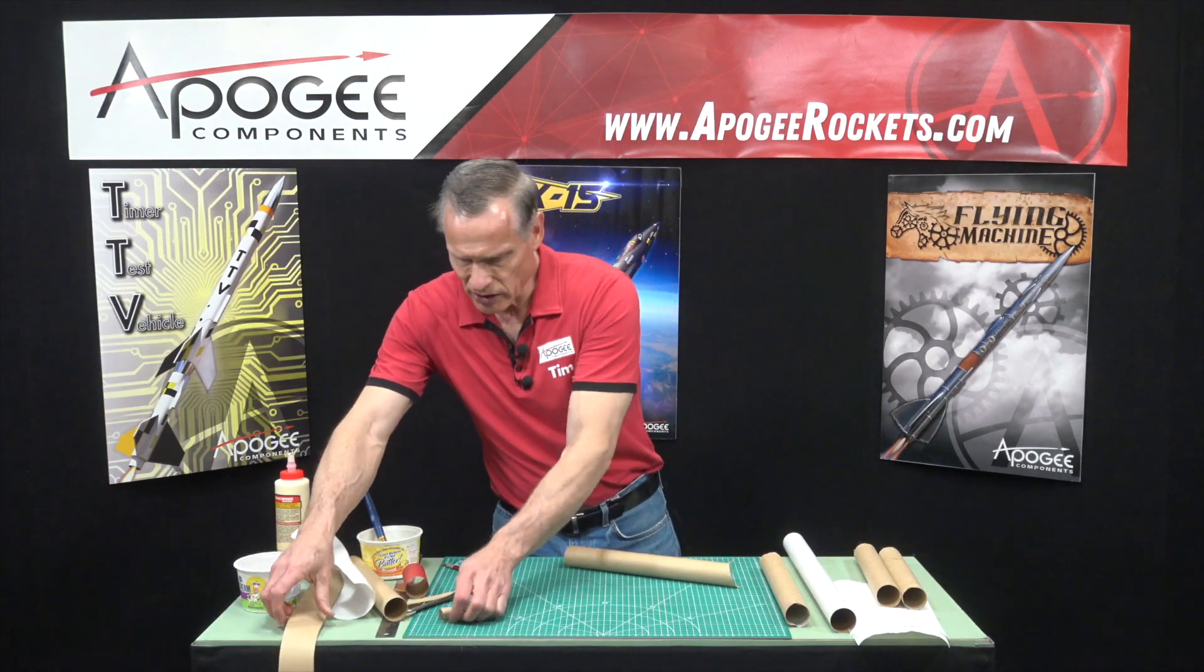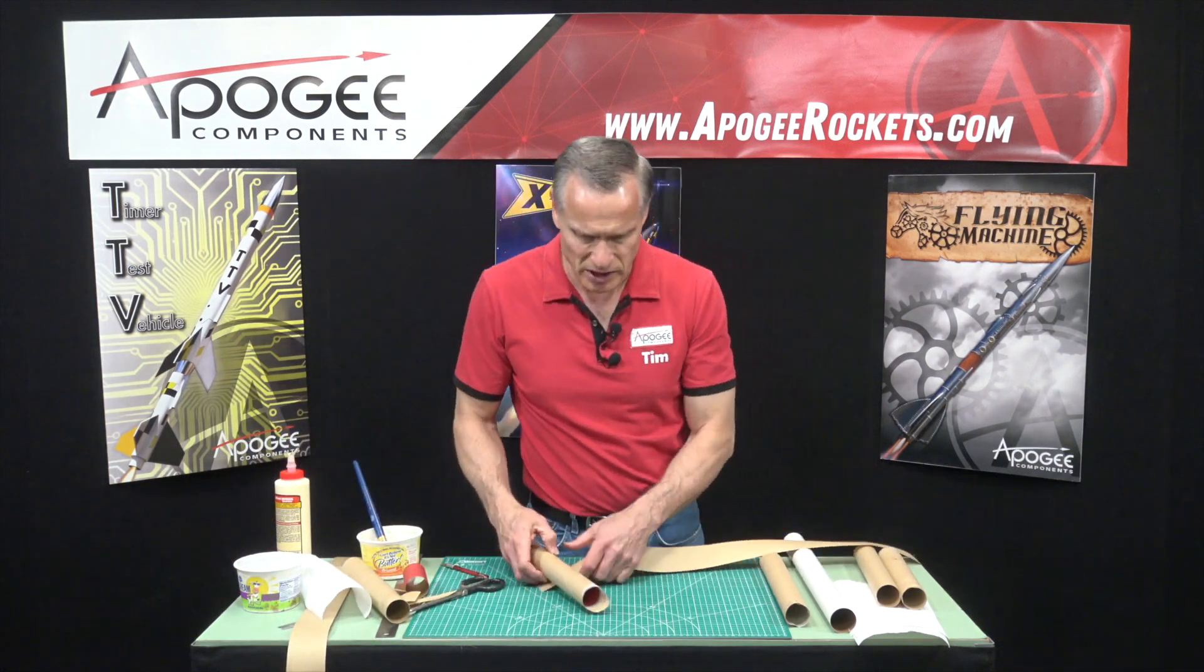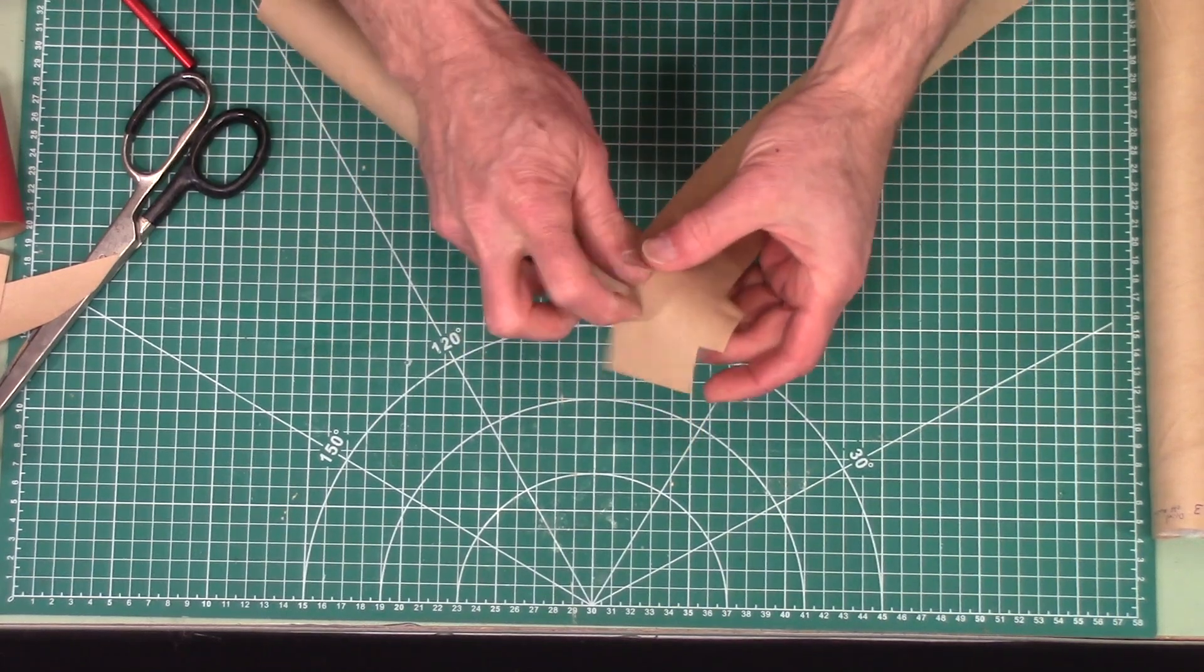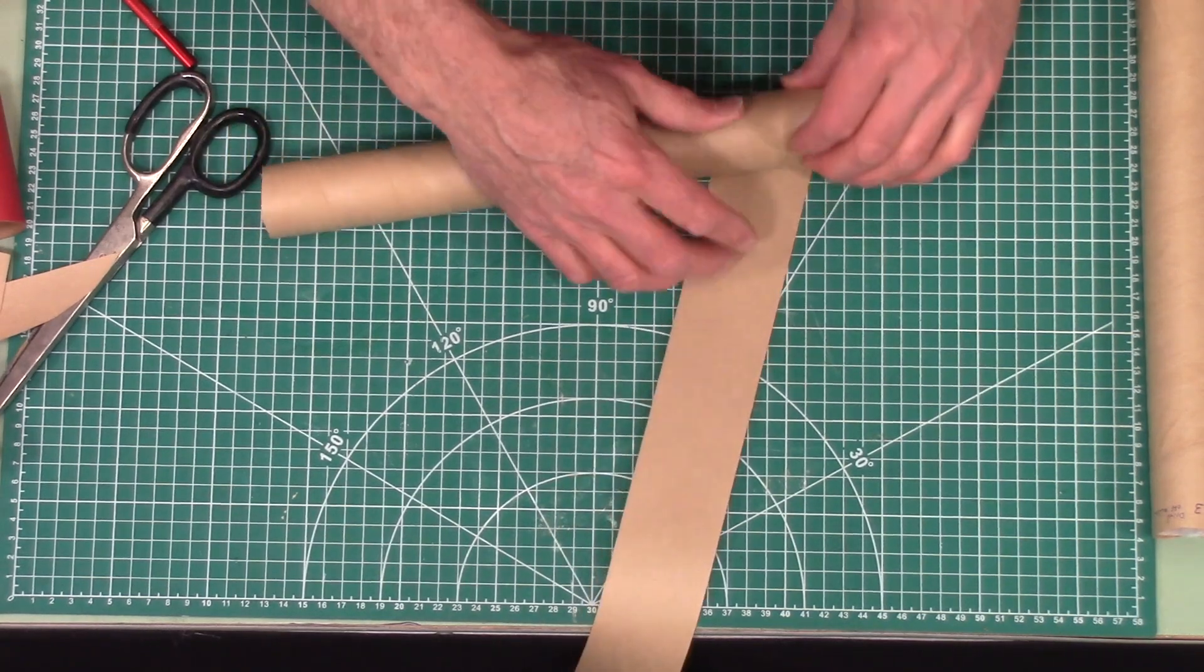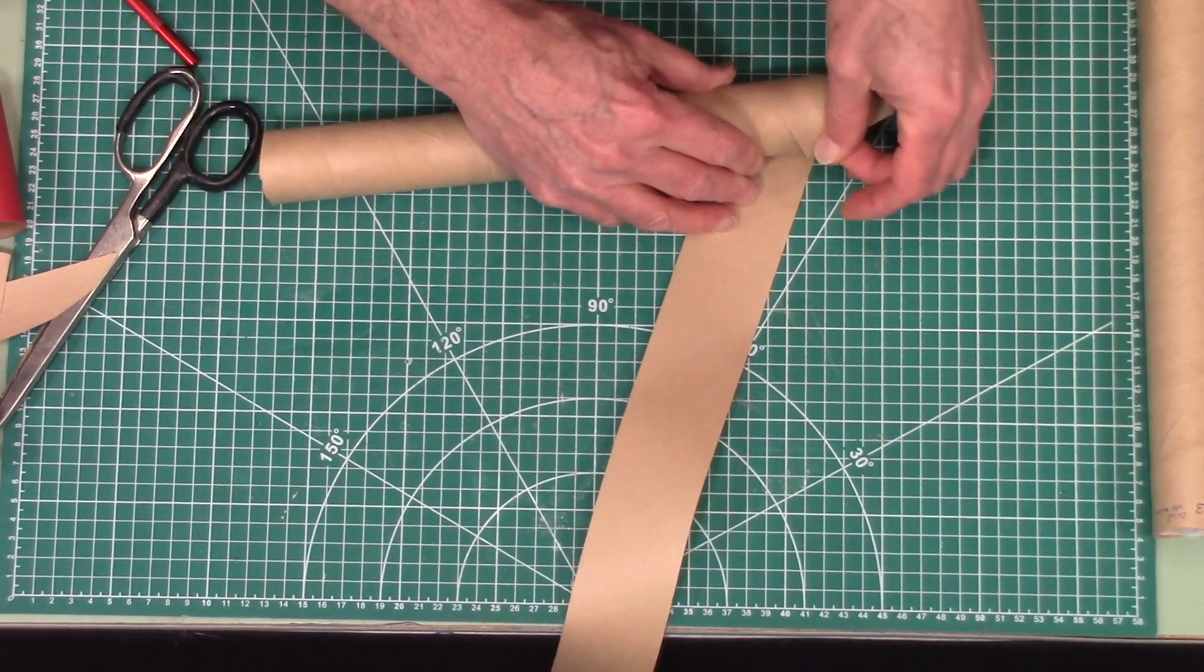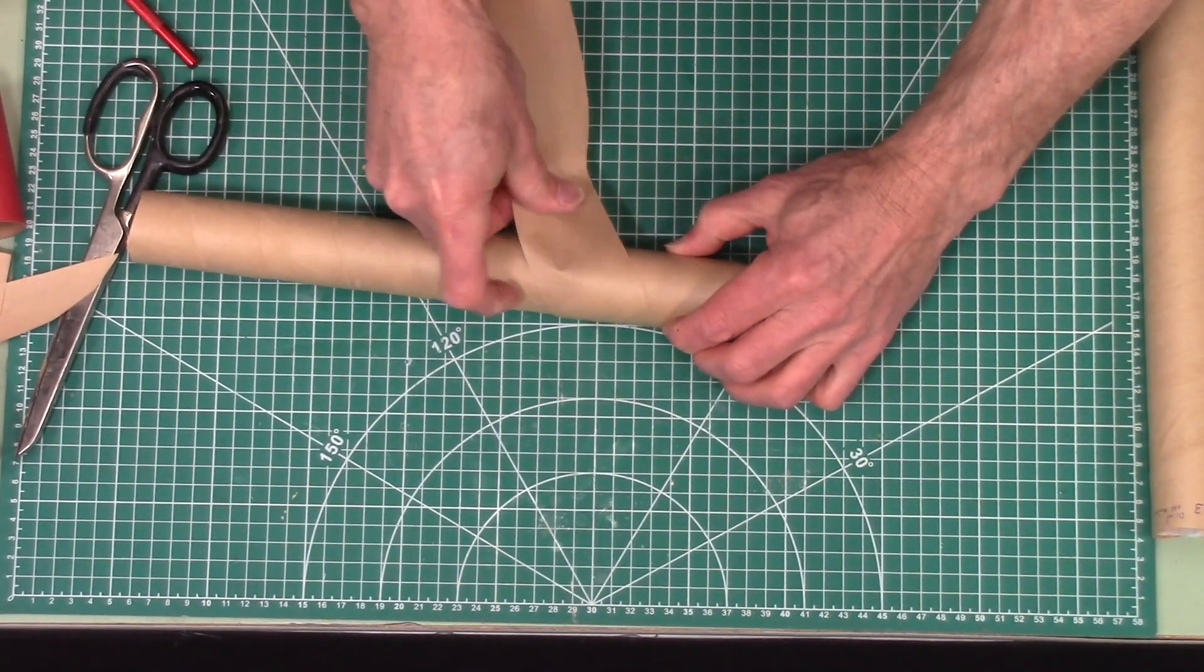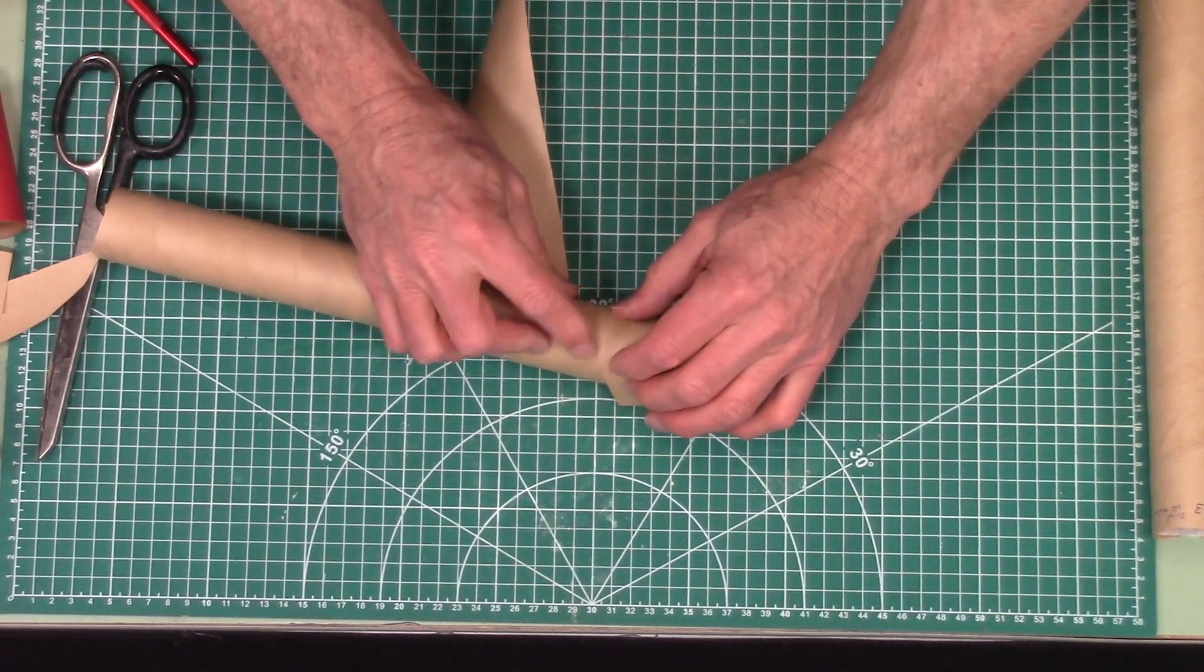All right, so now the second layer, we're going to do it very similar. This time, we're going to do it in the same direction, but we want to overlap the spiral from the first one. Now this one, I want, if I can, to try to get it so that there's no overlap on the spiral. You can see, this is really hard to see with this paper color, but I don't have any overlap right there.